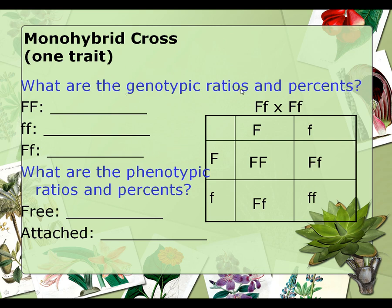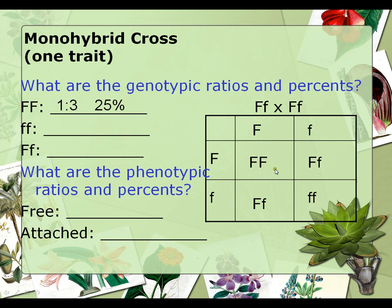Let's talk about the genotypic ratios. Two capital F's represent homozygous dominant — there is one homozygous dominant individual among the offspring, so the ratio is one to three, or 25%. There is also one that is homozygous recessive — one to three, or 25%. For heterozygous individuals, there are two out of four, which reduces to a one-to-one ratio, or 50%.